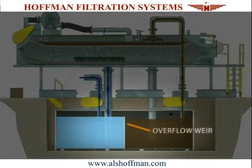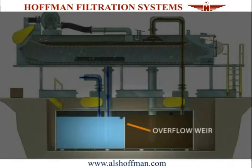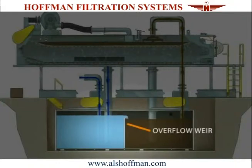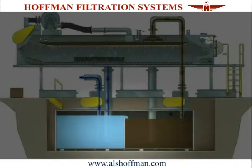In closed loop systems, an overflow weir is provided between the clean and dirty tanks, whereby the dirty liquid can overflow into the clean tank to continue the process. In this way, it is not necessary to immediately stop the process to address the overflow. The overflow weir also allows clean liquid to overflow into the dirty tank, thus controlling the liquid equilibrium throughout the closed loop of the process system.